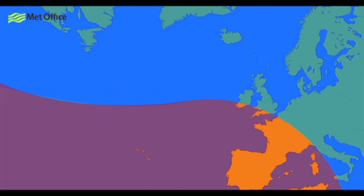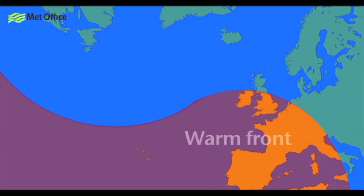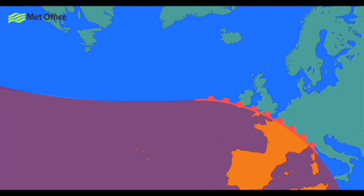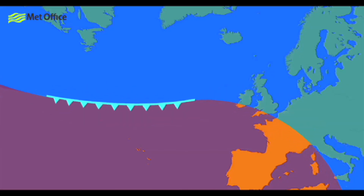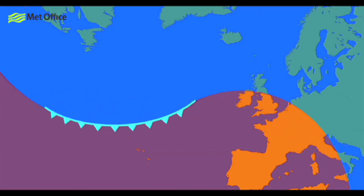If the warm air is stronger than the cold air, then this is called a warm front. You may have seen this on TV as a line with red semicircles along it. The semicircles point towards the cold air and the direction in which the front is moving. If the cold air has the upper hand, then it's a cold front, which is shown by a line with blue triangles along it. The blue triangles point towards the warm air and again in the direction of movement.